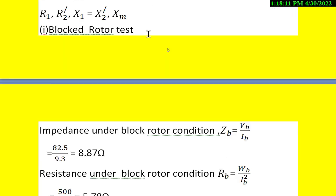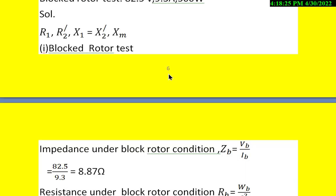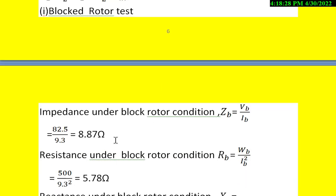From the blocked rotor test, we know the formula: ZB = VB/IB. VB is 82.5V and IB is 9.3A. After simplification, ZB = 8.87Ω.